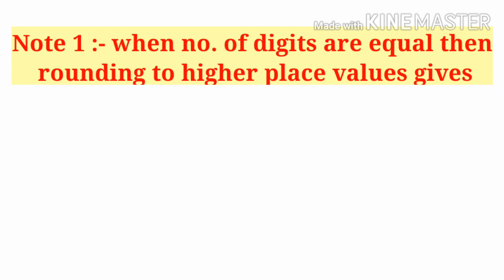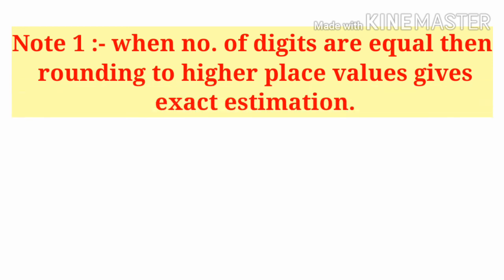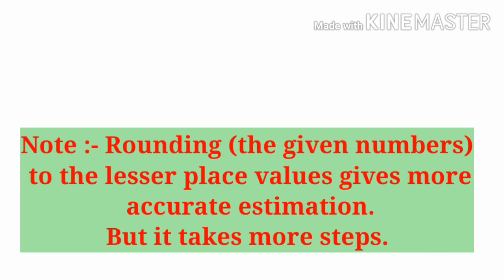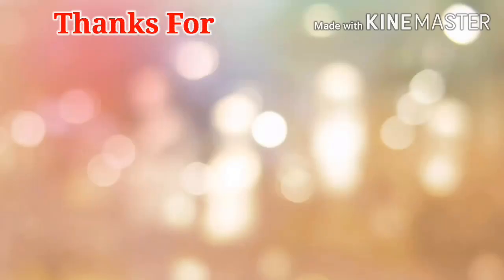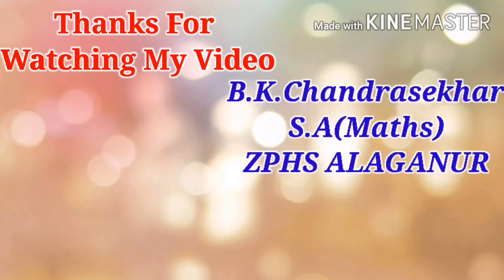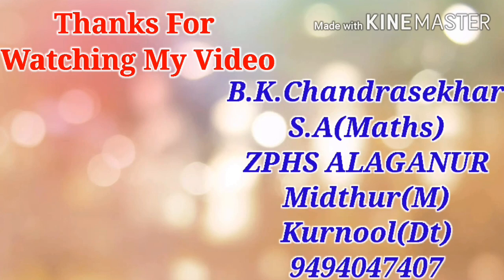From these examples, we can say that when the numbers of digits are equal, rounding to higher place values gives exact estimation. In general, rounding to lesser place values gives more accurate estimation, but it takes some more steps. Thanks for watching. If you like this video, please like, share, and subscribe.